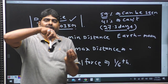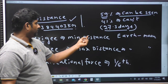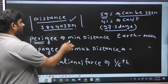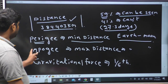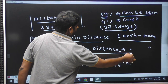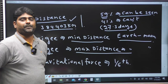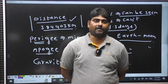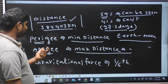Minimum distance between the Earth and Moon is called Perigee. Maximum distance between Earth and Moon is called Apogee. Similarly, for Earth and Sun: minimum distance is Perihelion, maximum distance is Aphelion.